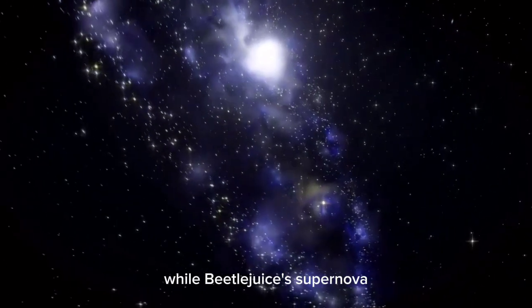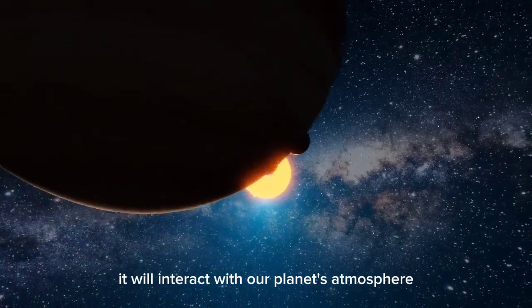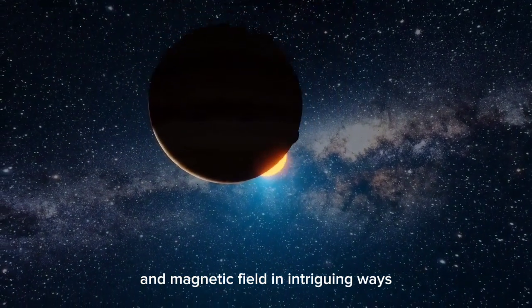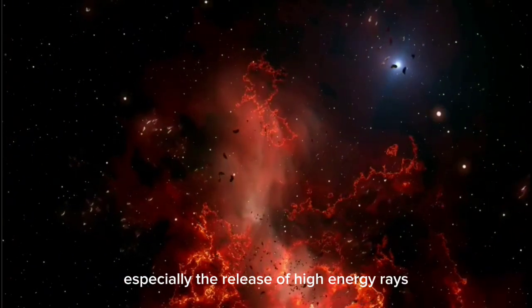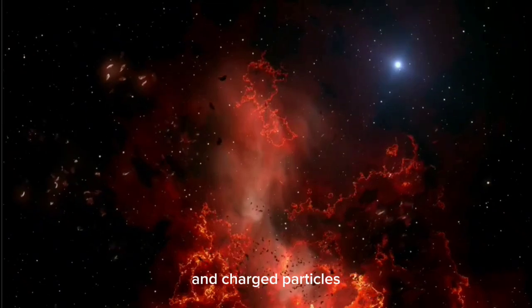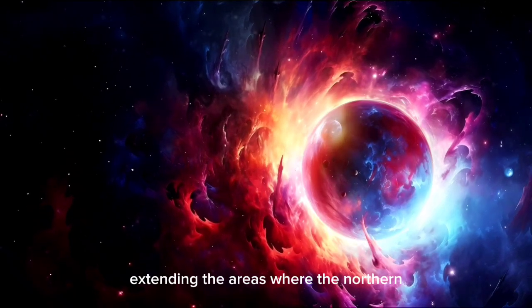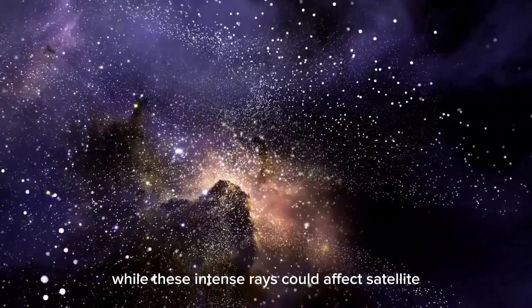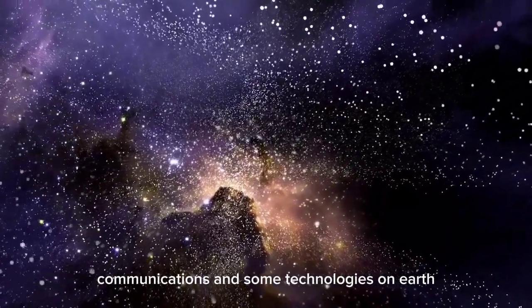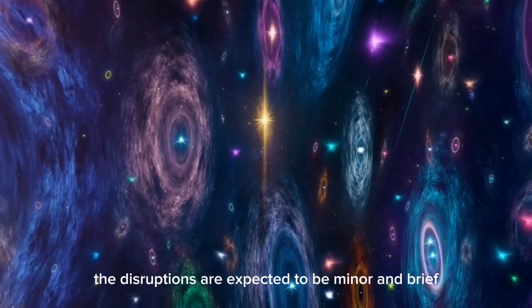While Betelgeuse's supernova explosion is not expected to harm Earth, it will interact with our planet's atmosphere and magnetic field in intriguing ways. The energy burst from the explosion, especially the release of high-energy rays and charged particles, could lead to more intense auroras, extending the areas where the northern and southern lights are visible. While these intense rays could affect satellite communications and some technologies on Earth, the disruptions are expected to be minor and brief.